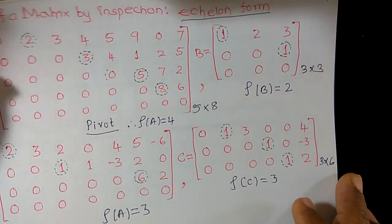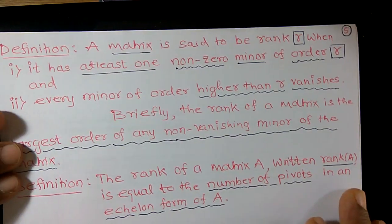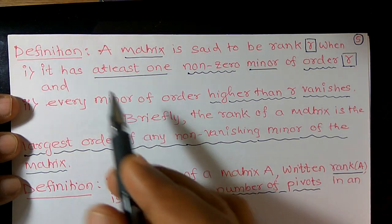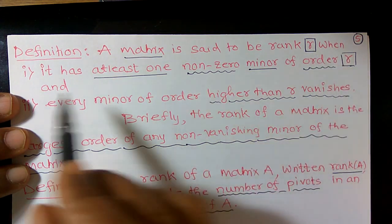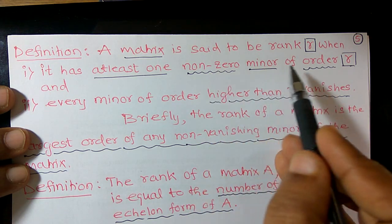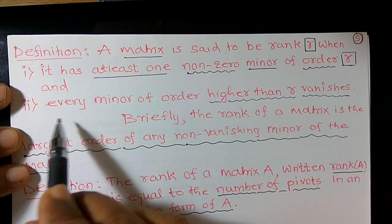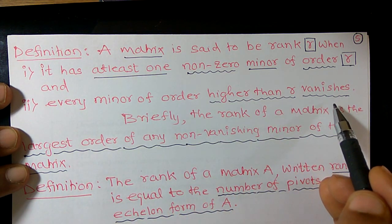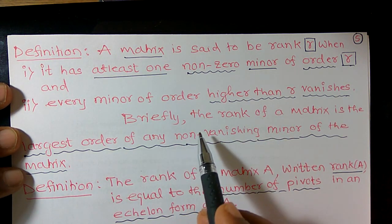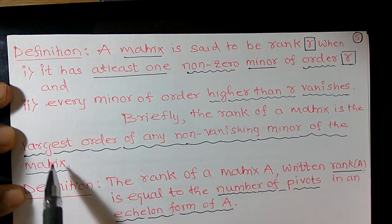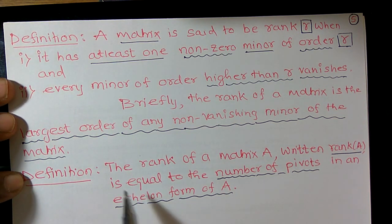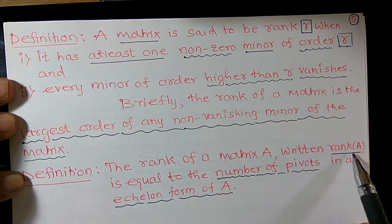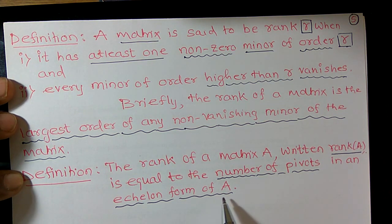We have observed enough examples and are now able to define the rank of a matrix. A matrix is said to have rank R when: first, it has at least one non-zero minor of order R; and second, every minor of order higher than R vanishes. Equivalently, the rank of a matrix is the largest order of any non-vanishing minor, or the number of pivots in an echelon form of the matrix. Thank you.